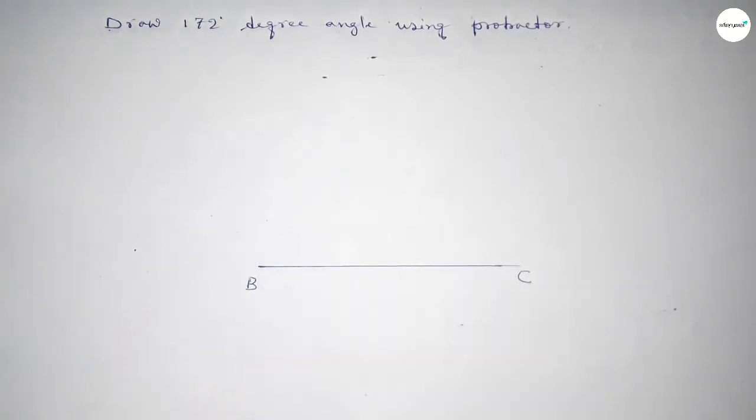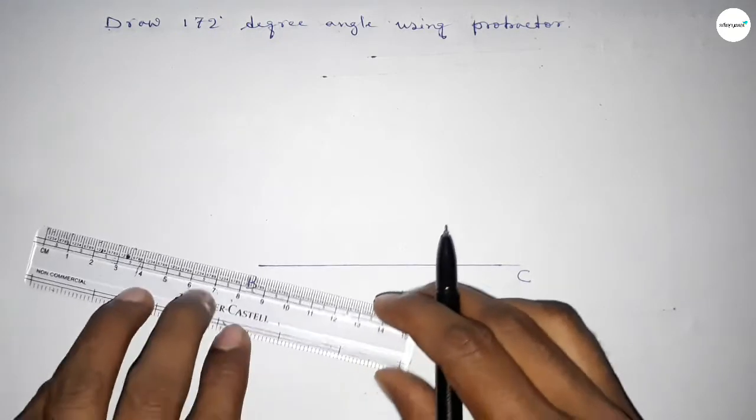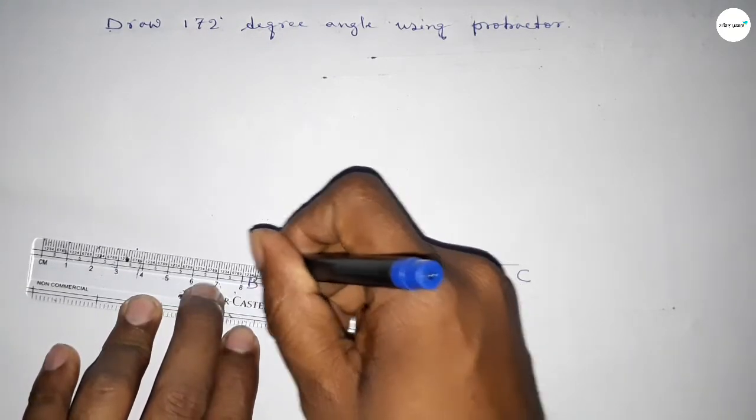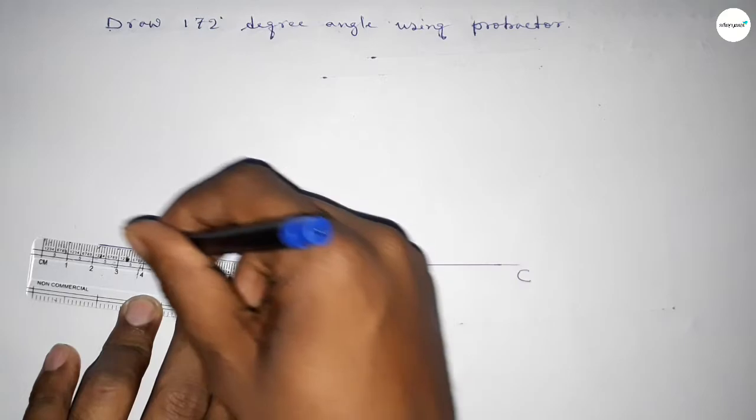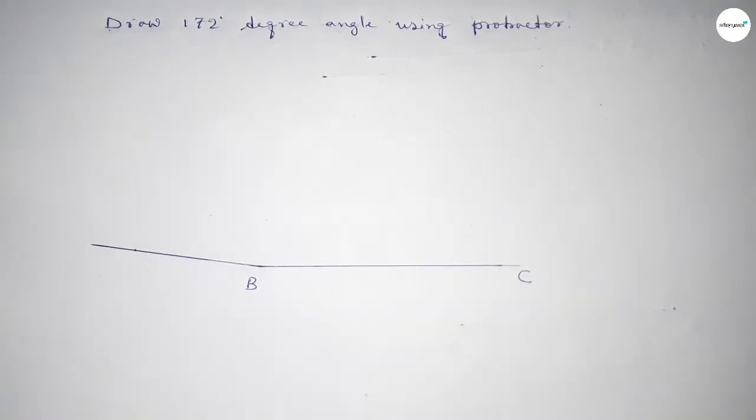Next we have to join this to get 172 degree angle. So now joining in this side and taking here point A.